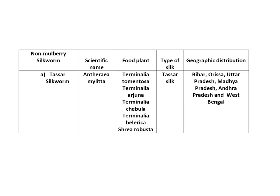Tasar silkworm: the scientific name is Antheraea mylitta. It feeds on food plants such as Terminalia tomentosa, Terminalia arjuna, Terminalia chebula, Terminalia bellarica, and Shorea robusta. The silk produced is called Tasar silk. Tasar silkworms are found distributed in Bihar, Orissa, Uttar Pradesh, Madhya Pradesh, Andhra Pradesh, and West Bengal.